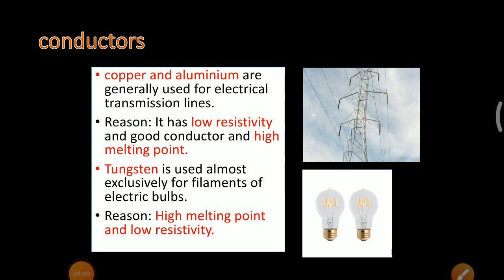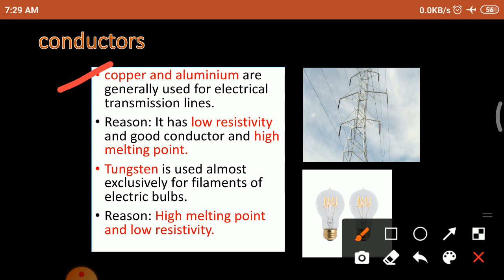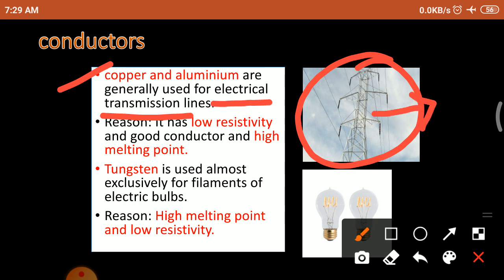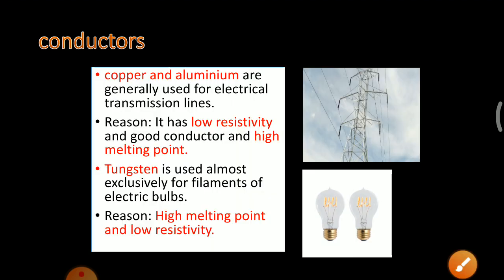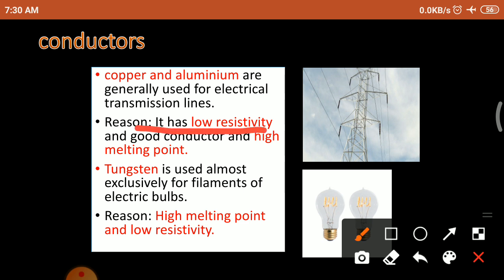What are the uses of conductors, alloys, and insulators? Copper and aluminium are conductors generally used for electrical transmission lines. There are two reasons: first, they have low resistivity so they are good conductors; second, they have a high melting point, so when current continuously flows in the wire it does not melt easily. Because of these two reasons we use copper and aluminium in electrical transmission lines.